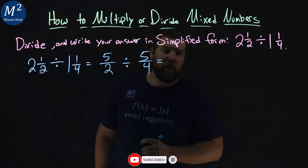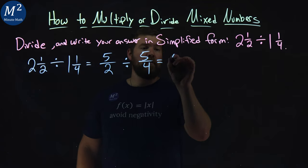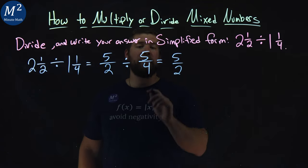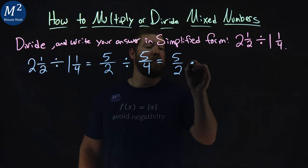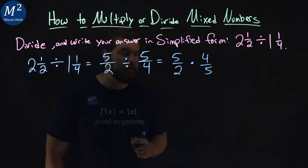Now one thing if you remember, dividing fractions is the same thing as multiplying by their reciprocal. So five halves divided by five fourths is equal to five halves times four fifths. Let's flip the second fraction there.